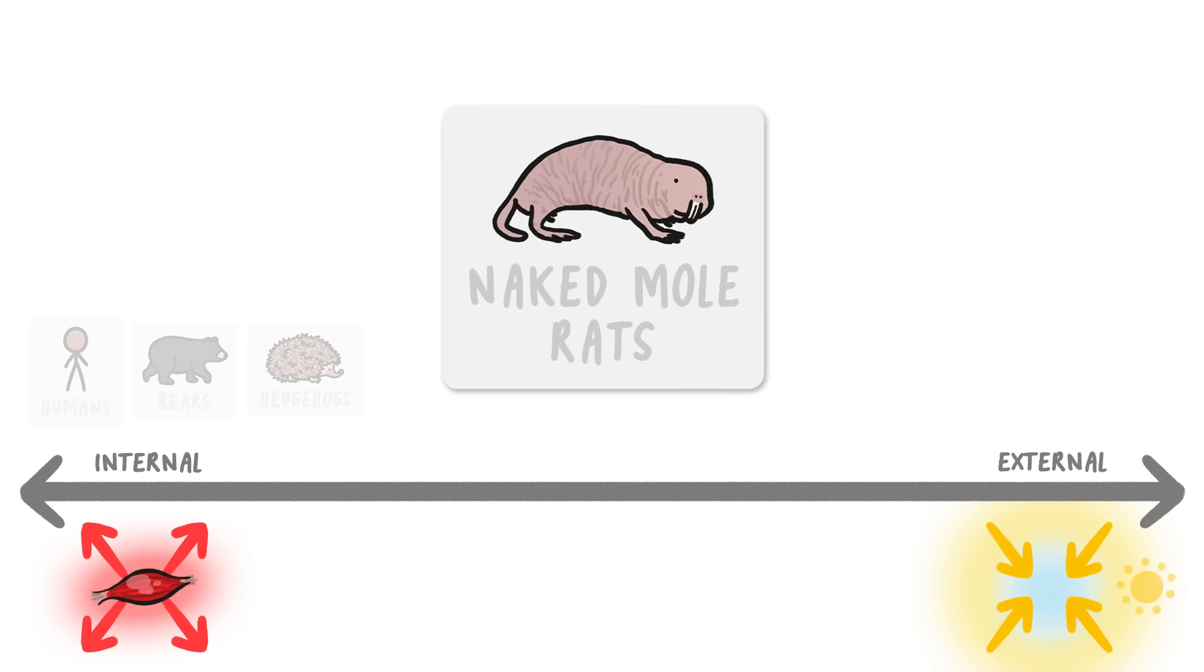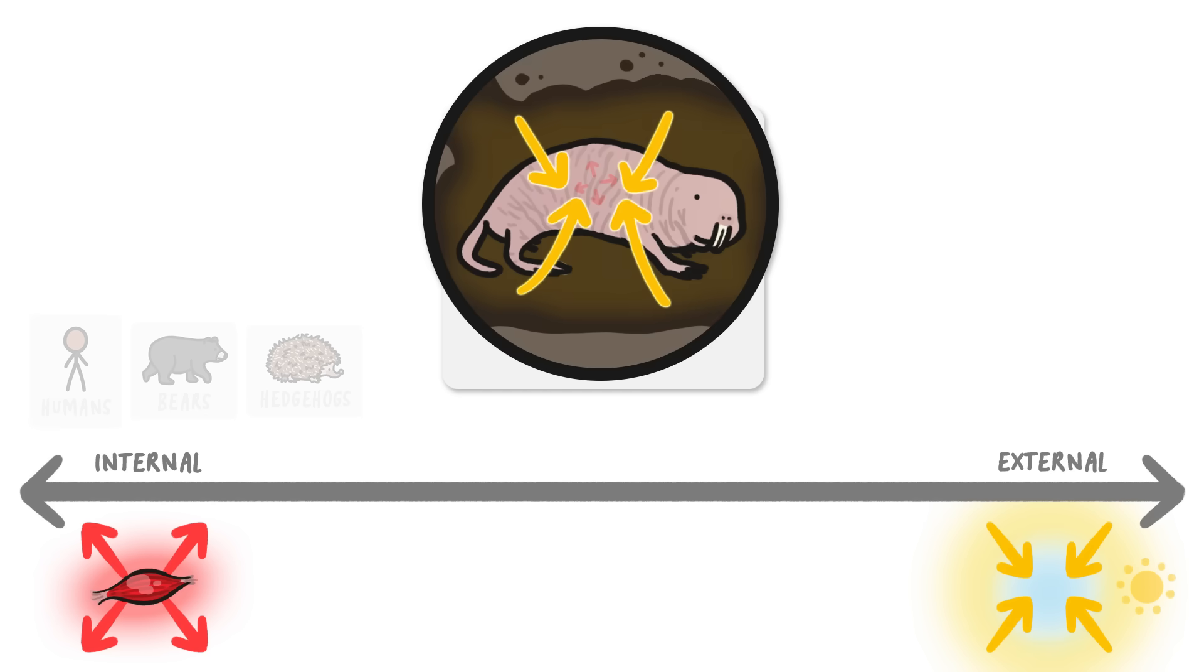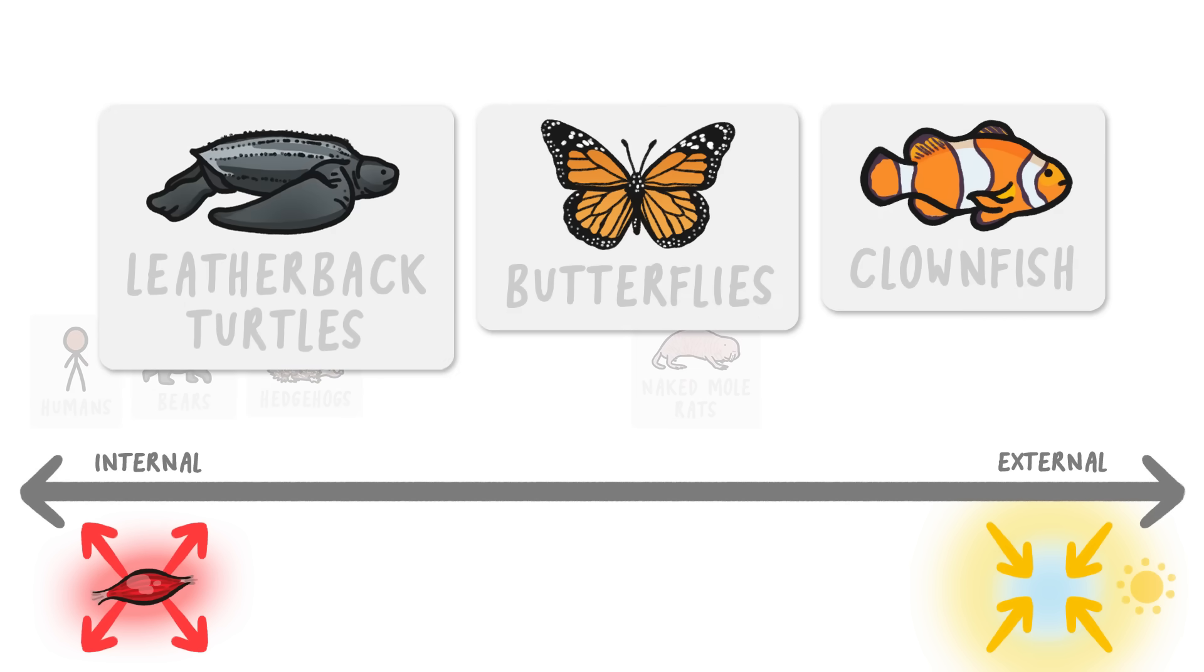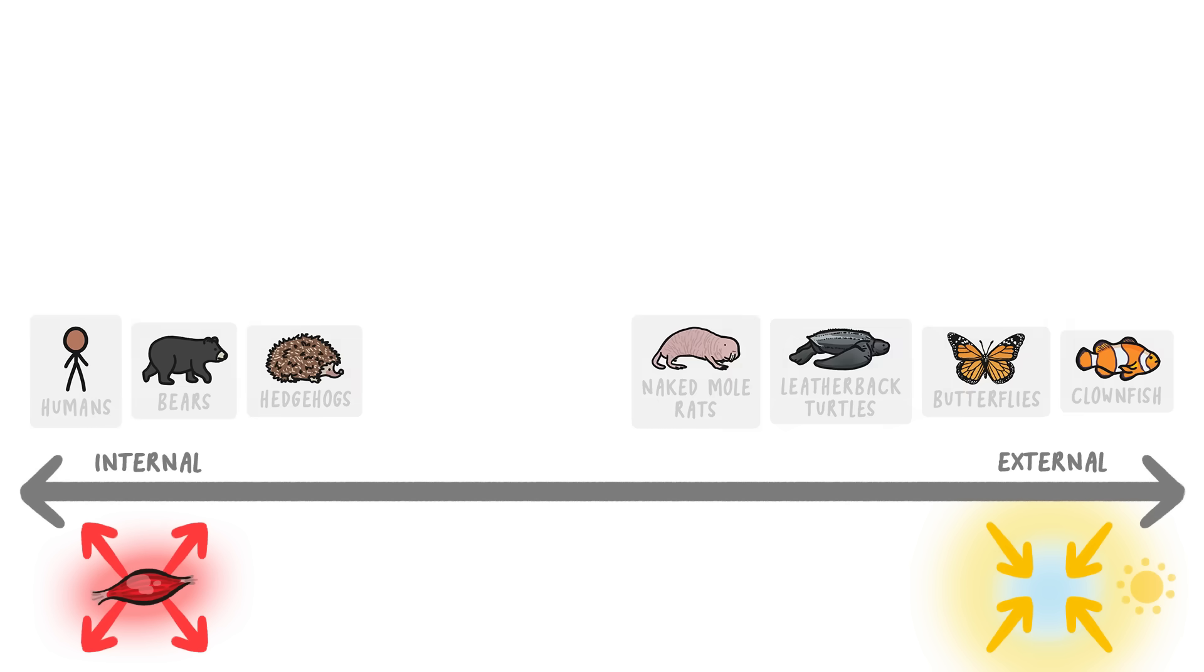But other mammals, like naked mole rats, have mostly lost that ability because they live in underground chambers with natural year-round climate control. So let's put them over here. And while many reptiles, invertebrates, and fish have to get most of their heat from their surroundings, and thus go here...